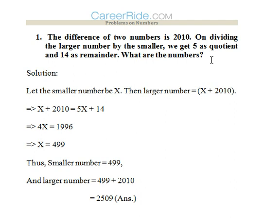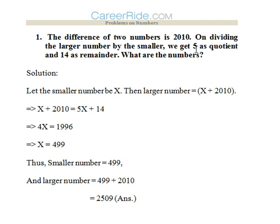We know that the difference between the two numbers is 2010. So let the smaller number be x and the larger number be x plus 2010. Now on dividing the larger by the smaller, we get 5 as quotient and 14 as remainder. So that means: smaller into 5 plus 14 gives the larger number. So x plus 2010 equals 5x plus 14, giving us 4x equals 1996, and x equals 499.